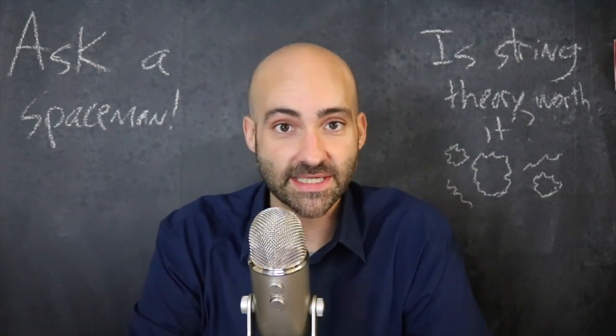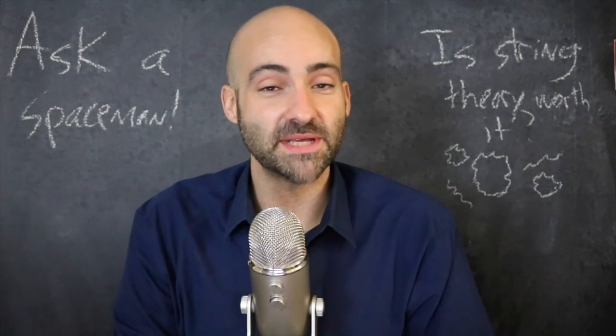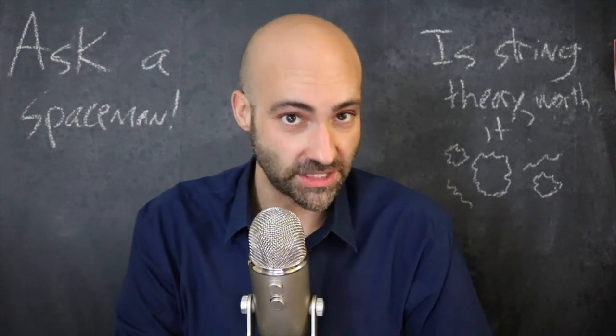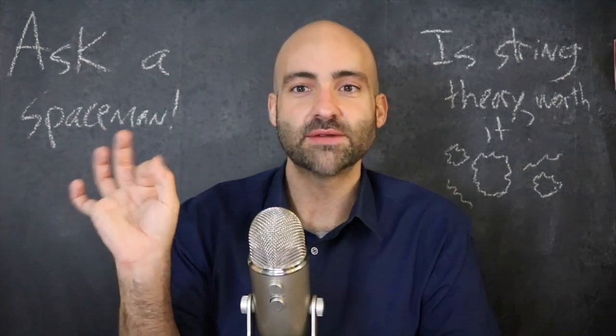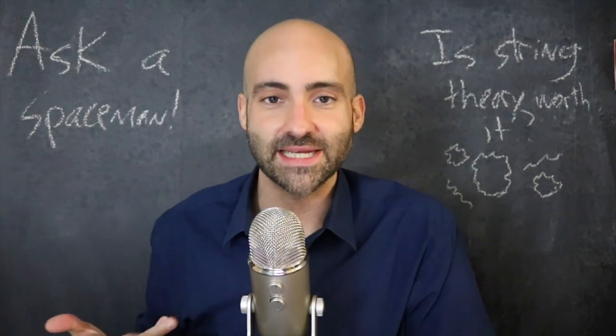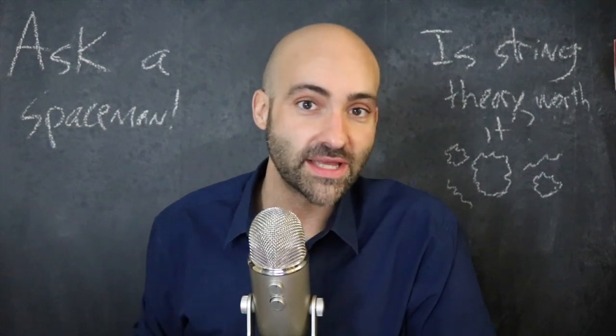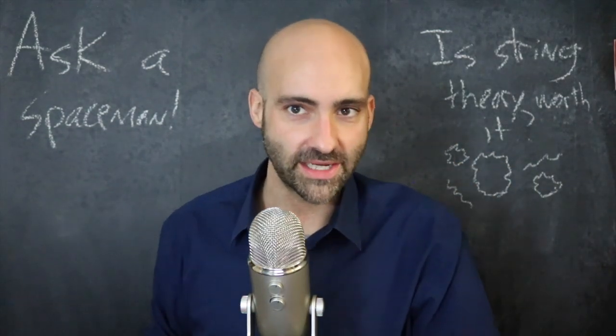And in order to make the math work in this 1960s version of string theory, there needed to be 26 dimensions. That was the amount of room that these strings needed to actually do their stringy thing and for all the math to line up.